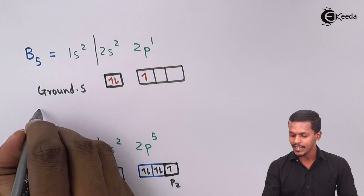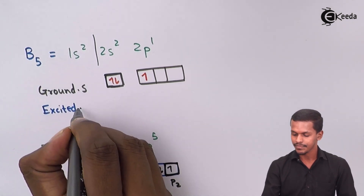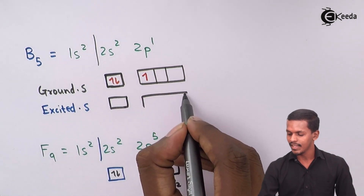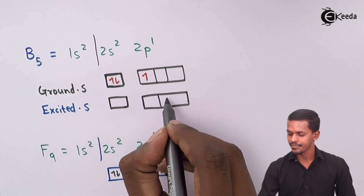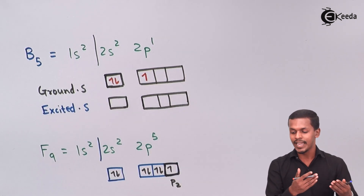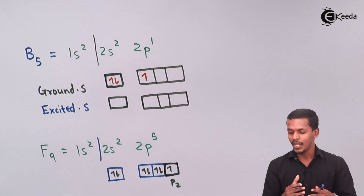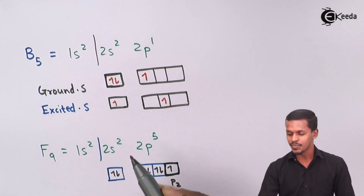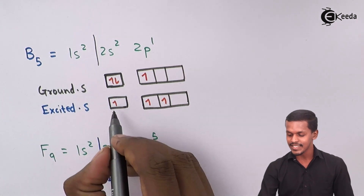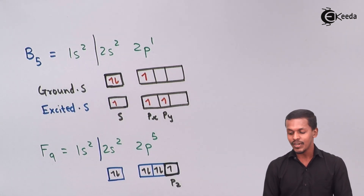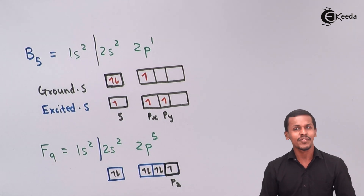To achieve this, we excite the electrons of boron — shifting one electron from the lower energy level 2s up to the higher energy level 2p orbital. The energy difference is small enough to allow this shift. Now in the excited state, the s, px, and py orbitals are each half-filled, giving us three half-filled orbitals ready for bonding.